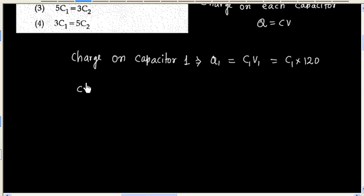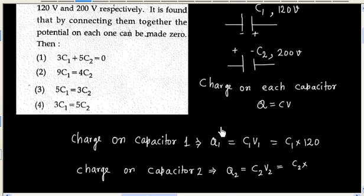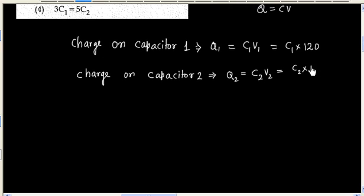Similarly we can calculate charge on capacitor 2. That is Q2 equals C2V2. V2 is 200V. So this is the charge and unit will be coulomb.